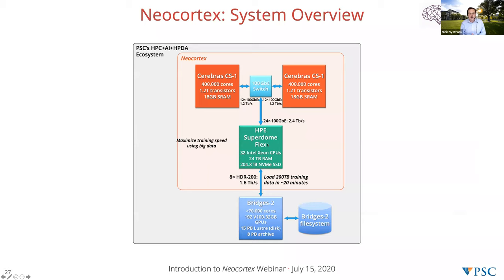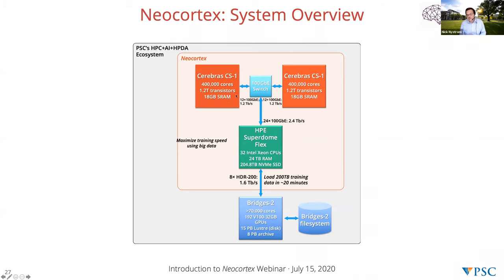The system diagram is fairly simple. Bridges 2 is at the bottom — over 70,000 cores, over five petaflops, a lot of disk, 192 Volta 32-gigabyte GPUs for deep learning training and other purposes. That connects at 1.6 terabits per second to the SuperDome Flex, over which data is cached for training iterations. That then goes through a 100 gigabit switch to the two Cerebras CS1s. Each one of these was independently, up until NeoCortex, the greatest training system in the world. Now we have two of them, and we'd really like to explore training across them as well.